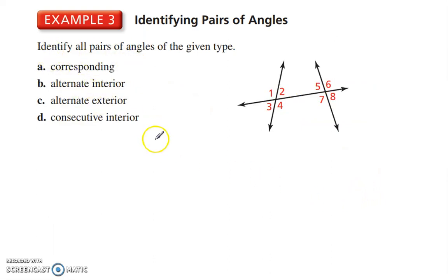All right. So let's identify all pairs of angles of the given type. Corresponding. All right. So corresponding means in the same position. So we have 1 and 5, then 2 and 6, then 3 and 7, and finally 4 and 8. Those are the corresponding pairs of angles.